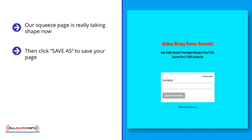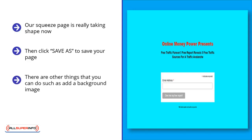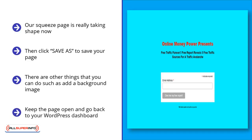Now we are going to add a nice background color to the squeeze page and tidy it up a little. This is how it looked in the end. There are other things that you can do such as add a background image. The email box is missing at this stage because we have not added the code from MailChimp. If you want more versatility with the design of your pages, you can purchase a special WordPress theme called OptimizePress or a special plugin called InstaBuilder, but these will cost around $97. Keep the page open and go back to your WordPress dashboard. We are going to make the OTO page using the same plugin.